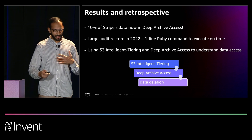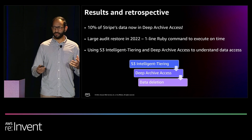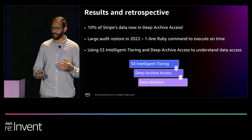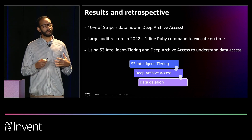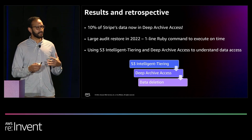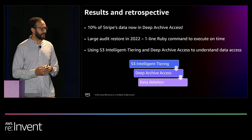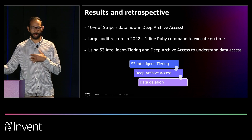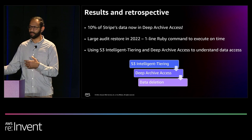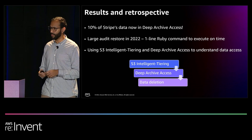We're also learning along the way that the combination of S3 Intelligent-Tiering and Deep Archive Access is providing more understanding of how our data is managed, and how we might want to think about even deleting some of the data that we don't need to hold on to.